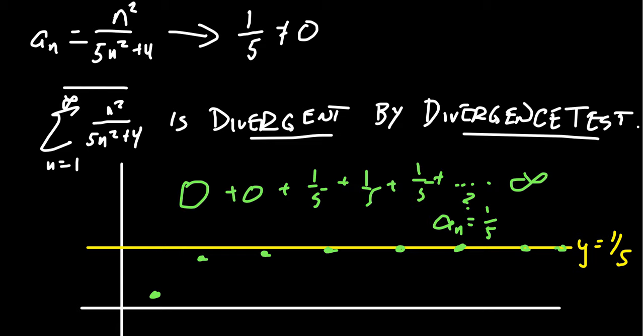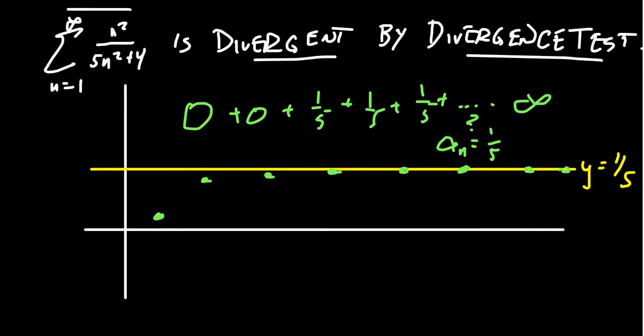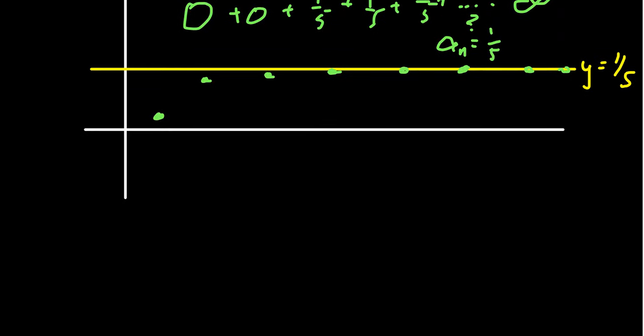Unless the terms in the sequence get smaller and smaller, the sequence needs to converge towards 0. But be warned — the converse of the divergence test is in fact false. That is, there do exist sequences which converge to 0, but the associated series diverges.